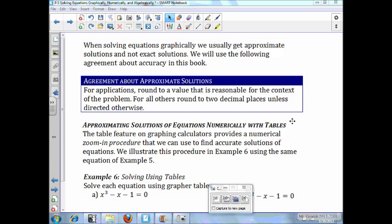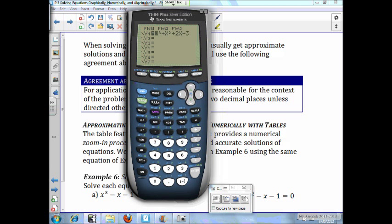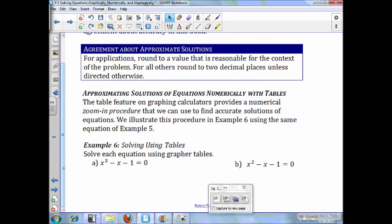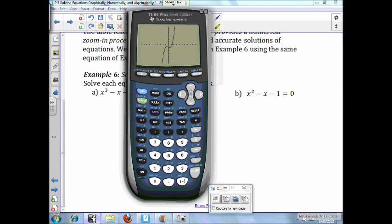We illustrate this procedure in example six using the same equation of example five. So, again, in your calculators, I want you to put in x to the third minus x minus one. We should see and understand that the zero is still about 1.32. Now, to get to your table, it's actually pretty easy. Press second, graph,